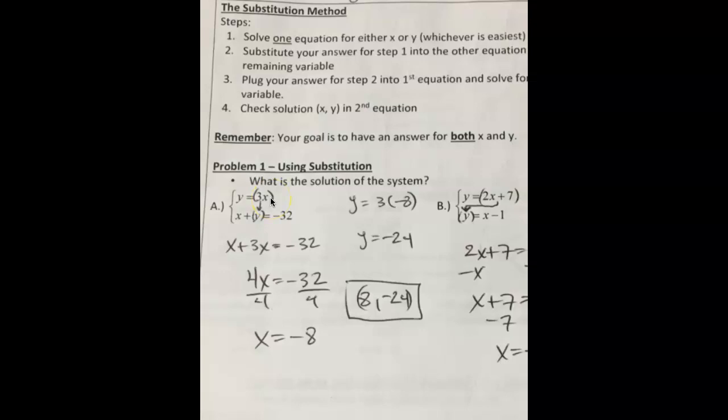Since y equals 3x in the first equation, I can substitute 3x in, as the arrow shows, in for y into the bottom equation, so I'd get x plus 3x equals negative 32. This equation is really just the original x plus y equals negative 32, except we substitute 3x in for y. That can be a tricky concept, so make sure you do your best to process that.